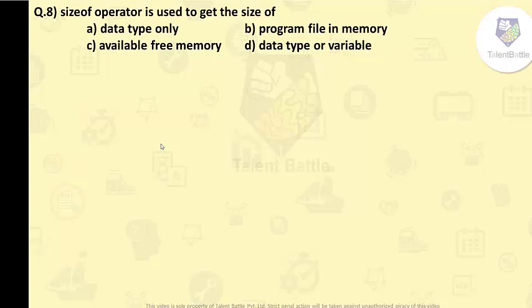The thing is, the sizeof operator returns the size of its operand or the parameter between its brackets. It can be applied to any data type as well as a variable. So the answer is D: data type or variable. sizeof operator cannot be used to check the available free memory in C, so C is definitely not an option, as well as B.